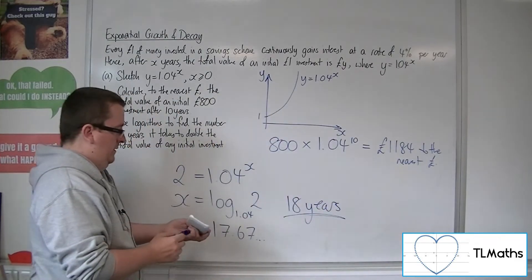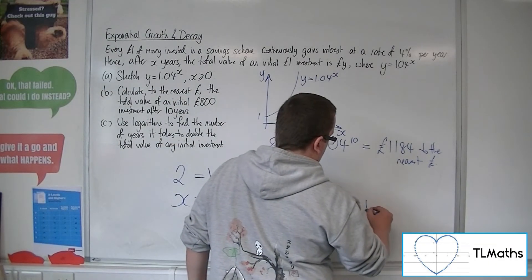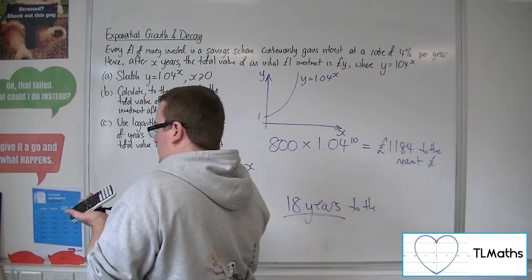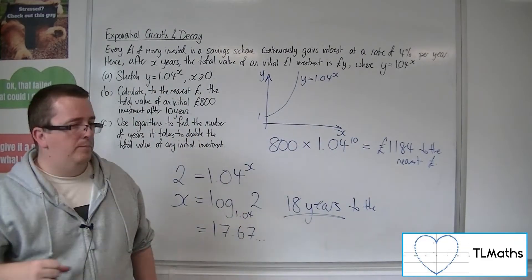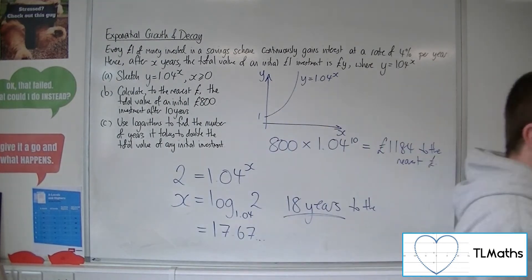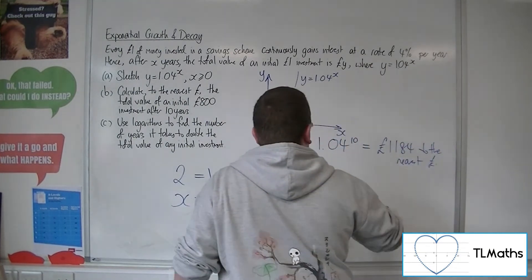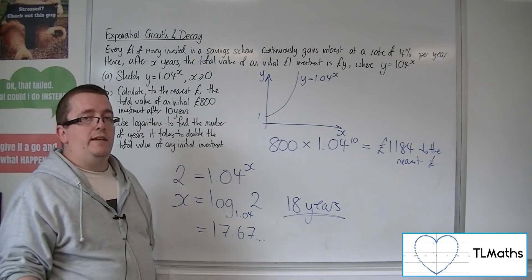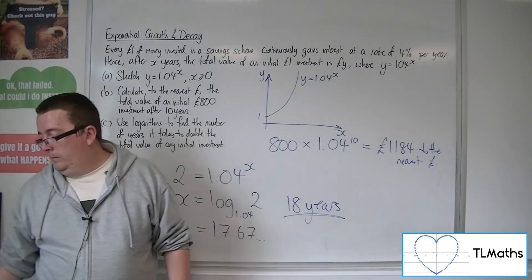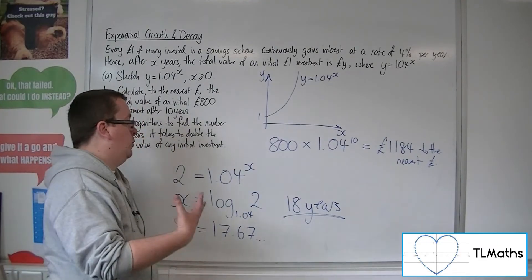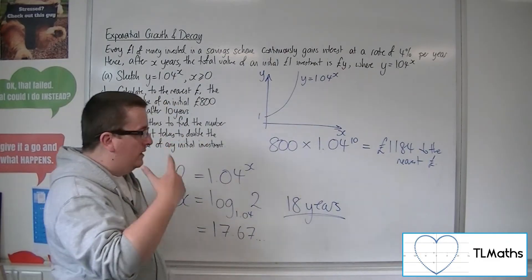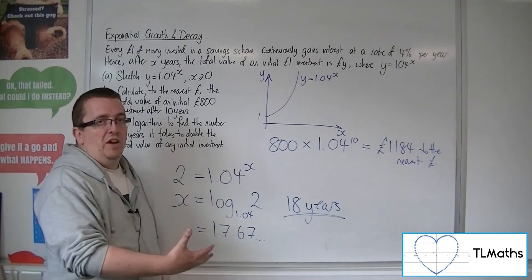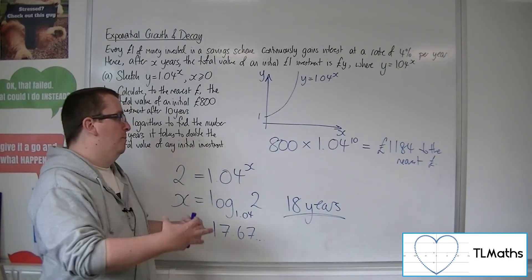So to the nearest year, well, not really to the nearest year. Well, it is in that sense, but what I'm meaning by that is that I can't put 17 years. So if it was 17.47, I wouldn't put 17 years, because at 17, we haven't quite doubled our money yet. It would still be 18 years. I would still need to wait another year before my money had actually doubled, but by that point it would have actually gone past doubling.